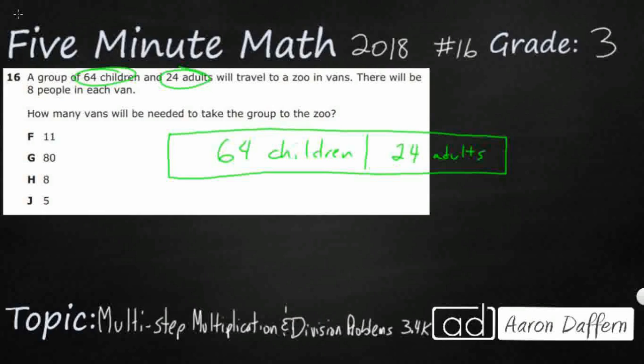And then there's going to be eight people in each van. So what we're going to do here to make our strip diagram is we're going to say we get vans of eight. And then the question is, how many vans of eight does it take to get all of these people?